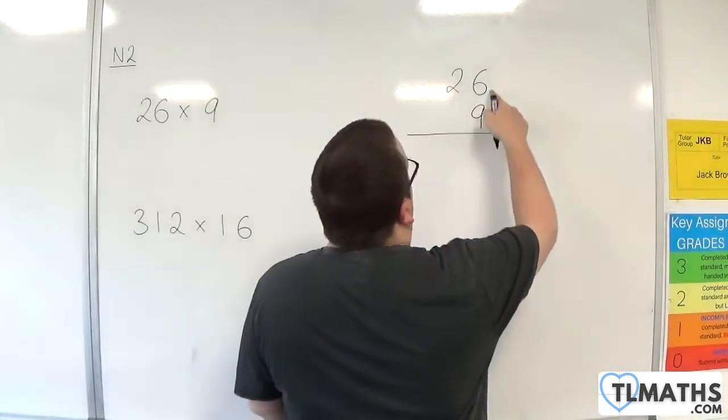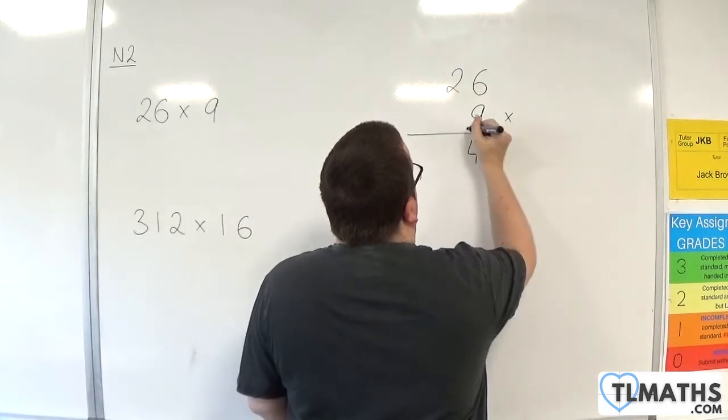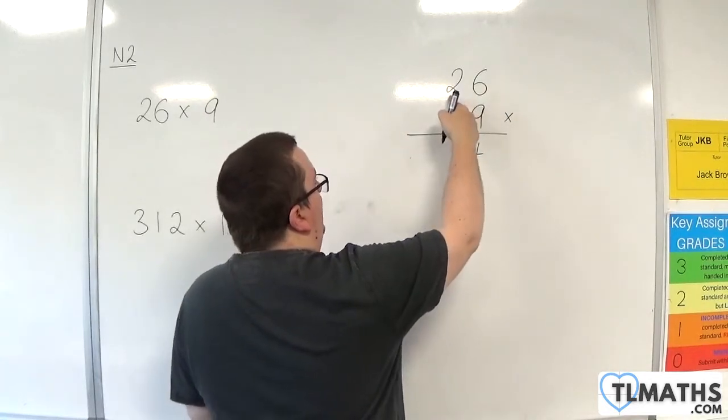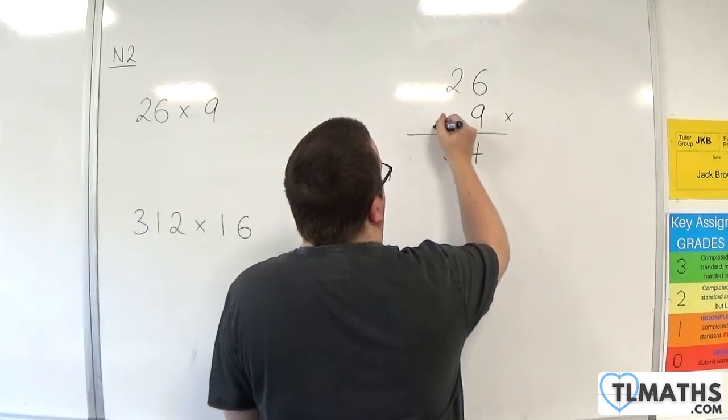So first of all, 9 times 6 is 54. So we put down the 4, carry the 5. We then do the 9 times the 2, which is 18, plus the 5 is 23. So we put down the 3, carry the 2.